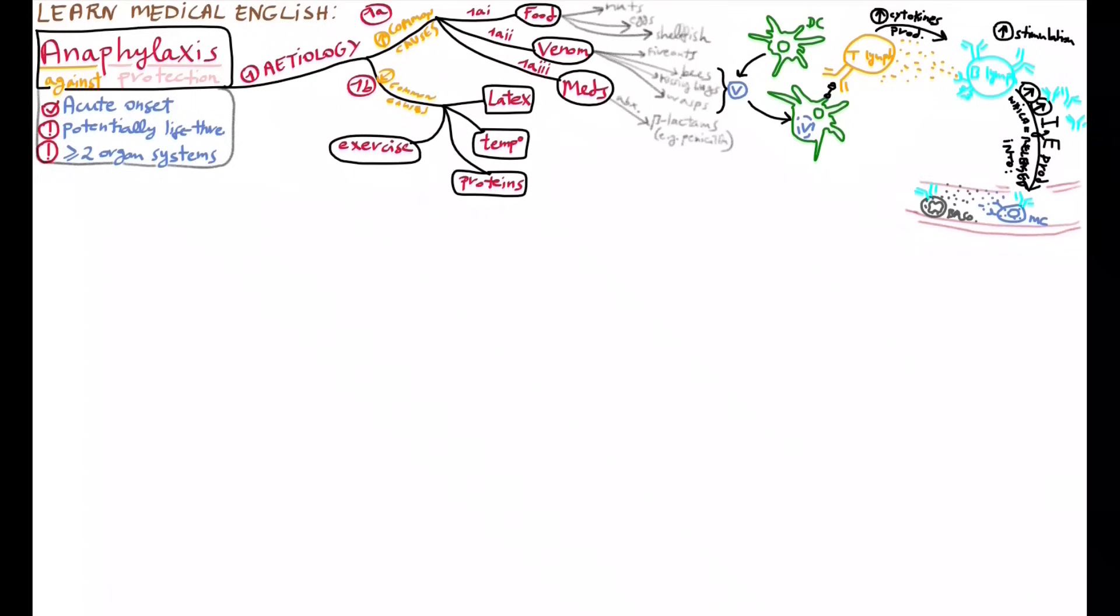In a simple allergic reaction, these molecules would cause some localized damage, like swelling around the sting site. But in anaphylaxis, these molecules leak into the bloodstream, thus reaching multiple organ systems.